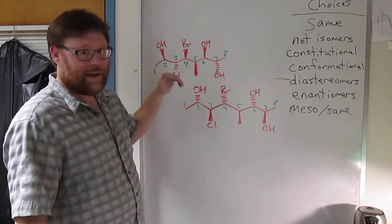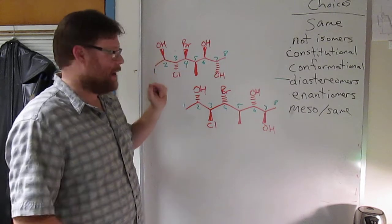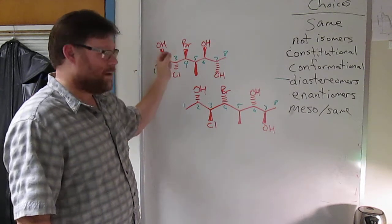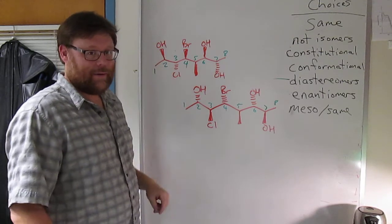If one R changes to S and one R stays R, or one S stays S, so one chiral center changes and one chiral center doesn't, the molecules are diastereomers.